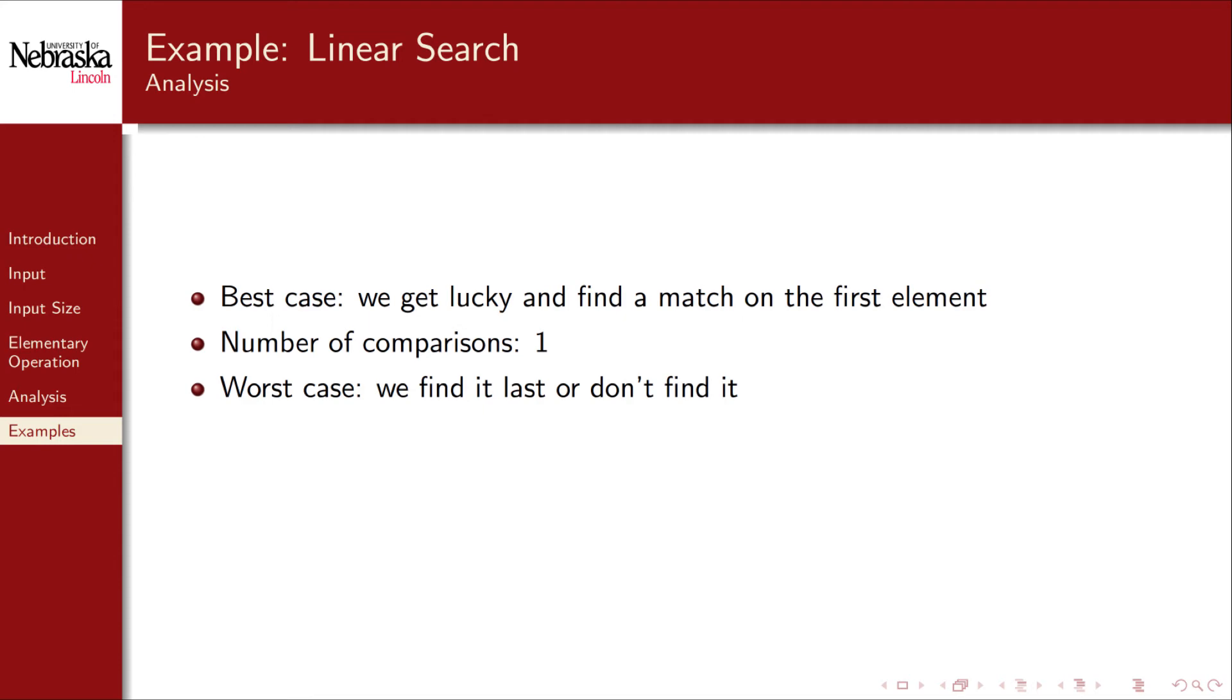However, we're more interested in the worst case scenario in which we find a match at the last element or don't find it at all. In either case, we would compare the key to each and every element resulting in n comparisons. You can also do an average case analysis on this algorithm. A full average case analysis would require defining a probability distribution on successful searches, which we'll omit here. A naive way of looking at it is to take the average of the best and the worst case, in which you still get approximately n divided by 2 comparisons, which is similar to what a more formal analysis would give you. In both the worst and average case, however, we would still get a linear function, thus the name of the algorithm.